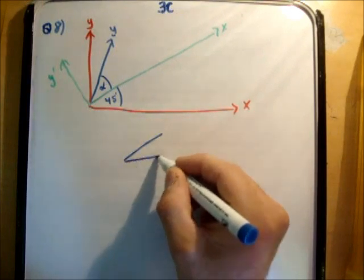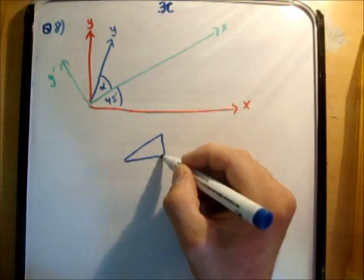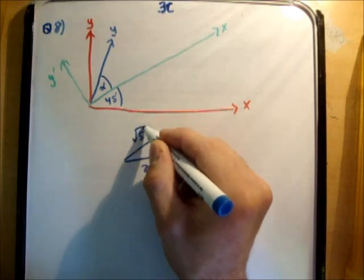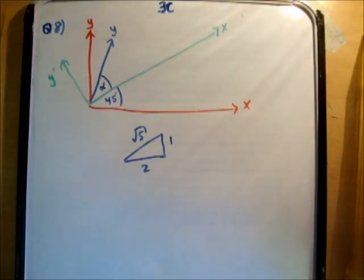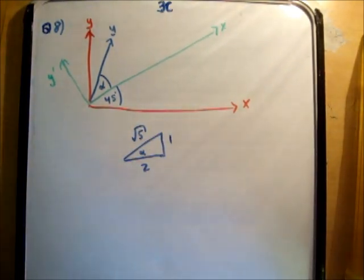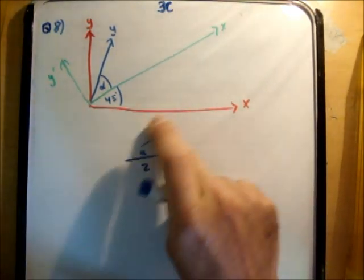So if we have tan inverse, so that tan is a half there like so, this will turn out to be root 5. So cosine is 2 over root 5 and sine is 1 over root 5 for the angle alpha. All right, so let's get rid of that.